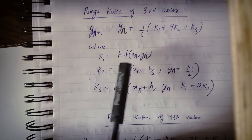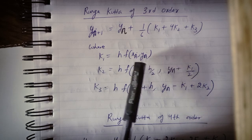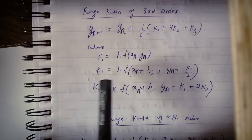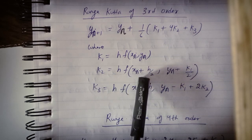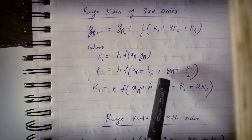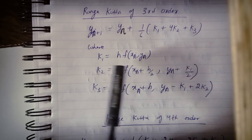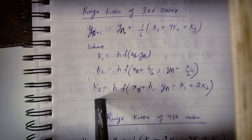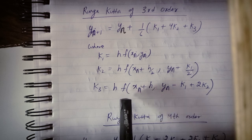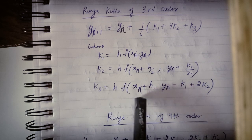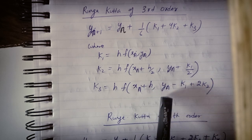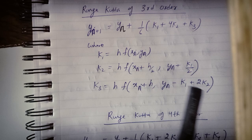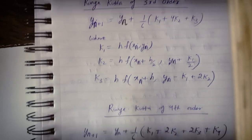I repeat: k1 is h into f of xn, yn — these values we have. k2 is h into f of xn plus h/2, yn plus k1/2 — k1 we have already found. And k3 equals h into f of xn plus h, yn minus k1 plus 2*k2.